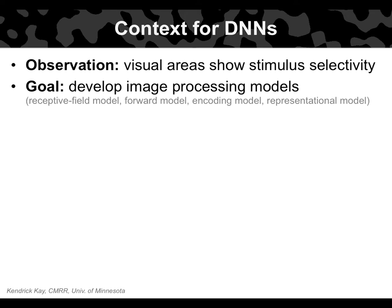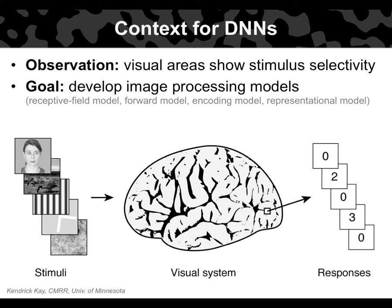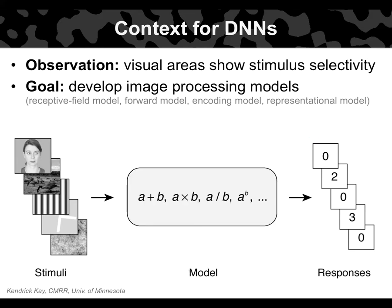Let's look at a simple example. We present some stimuli and measure responses from some unit in the brain, then ask: what is this unit computing? What property of the stimulus is being reflected in those responses? We can propose models of varying complexity — in the end, our models perform some sort of image processing operation. Consider this simple linear model where i ranges over the pixels of the image, x-sub-i is the luminance of the i-th pixel, and w-sub-i is a weight associated with that pixel — the response is a weighted sum of the image luminance.